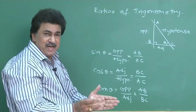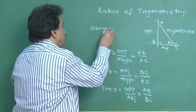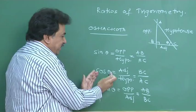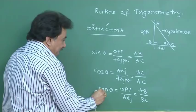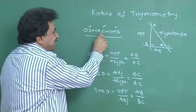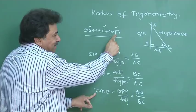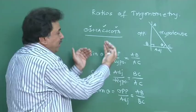Now you must be wondering how to remember this — it becomes slightly confusing. I'll give you one magical word: OSHA CHOTA. This word gives you all three ratios at once. S stands for sine — opposite upon hypo. C stands for cos — adjacent upon hypo. And T stands for tan — opposite upon adjacent. Once you know this word, the ratio comes to you automatically.